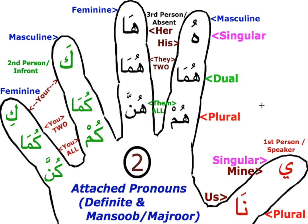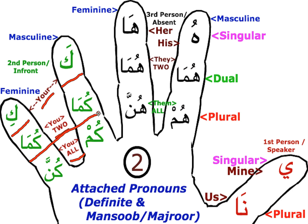Moving on to the second person: 'ka' — when attached, this means 'your' or 'yours' when speaking to a brother. 'Kuma' means 'you both,' 'kum' means 'you all' — this is for the masculine. For the feminine, it is 'ki' when speaking or talking to a sister, 'kuma' is again the same for the dual, and 'kuna' is for all the sisters in front whom we are speaking. So: ka, kuma, kum, ki, kuma, kuna.